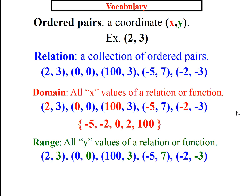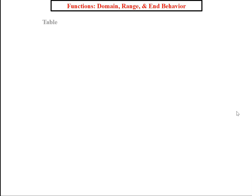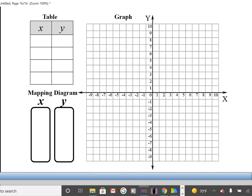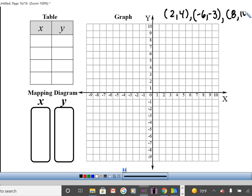There are three ways to represent a relation or function: using a table, using a graph, and using a mapping diagram. We've been using tables and graphs already. Given the relation (2, 4), (−6, −3), (8, 10) — is this a relation? Yes, because it's a bunch of ordered pairs together.